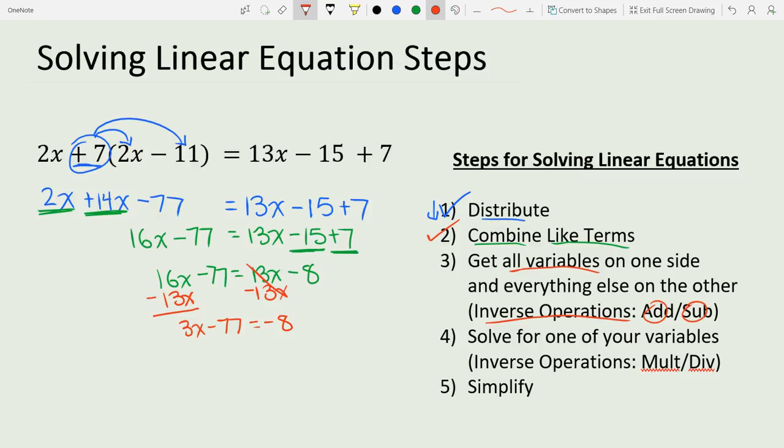Now I have all my x's on the left side, so I want to get rid of this minus 77. We use inverse operations—since we're subtracting, the inverse is adding. We add 77 to both sides. When we take 77 and subtract 8 from it, we have to borrow: 6, 17, 9, so we have 69. It's positive 69 because it's a positive 77 here.